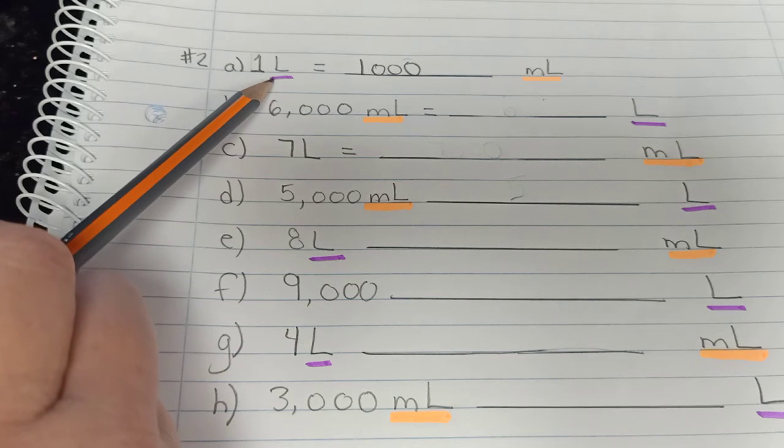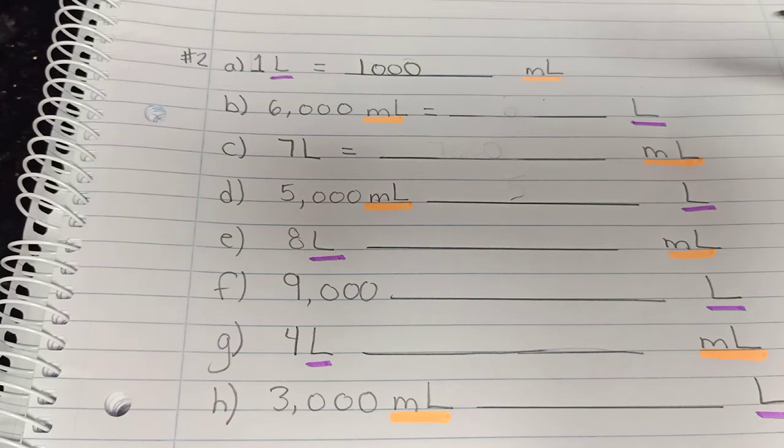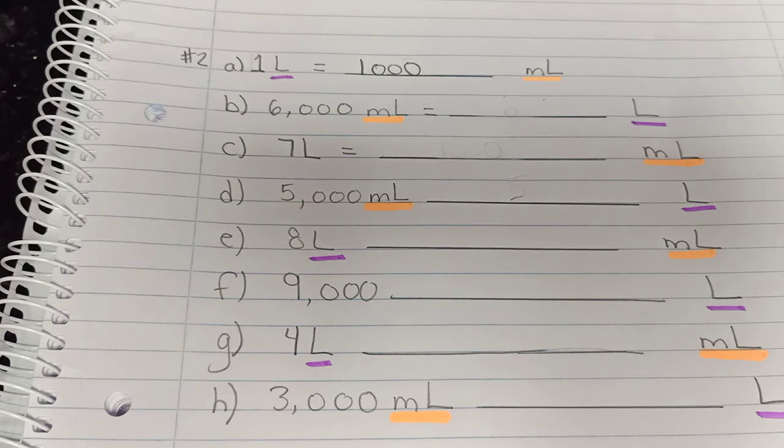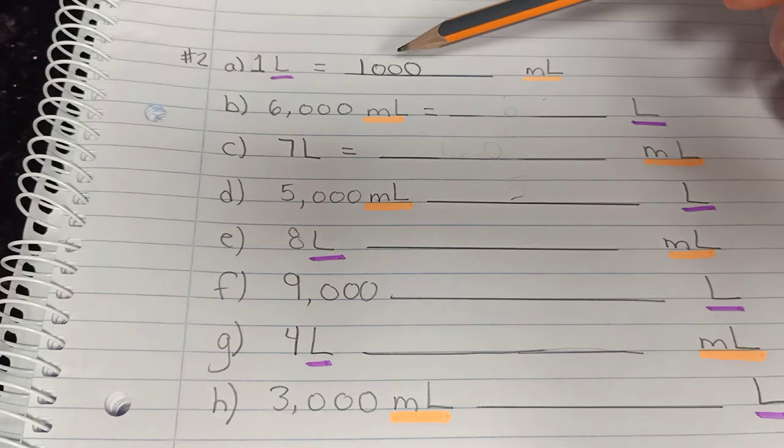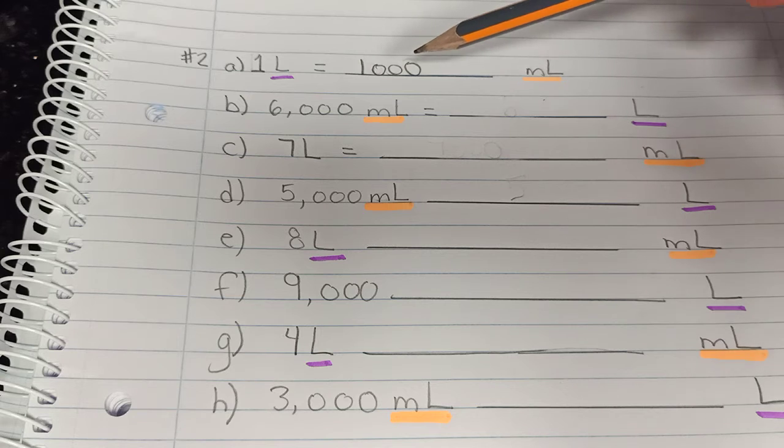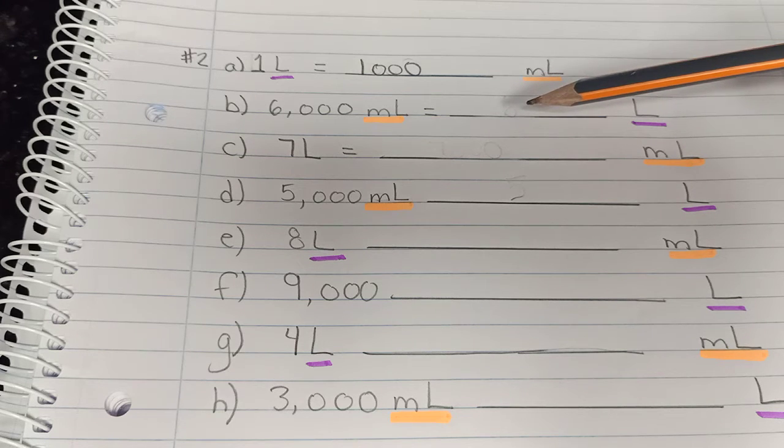I've underlined all of my liters in purple and all of my milliliters in orange just to keep it straight in my mind. From previous work I know that 1,000 milliliters is the same as one liter, so I'm going to use that knowledge to figure out the rest of these answers.